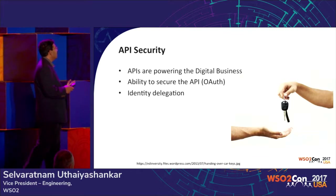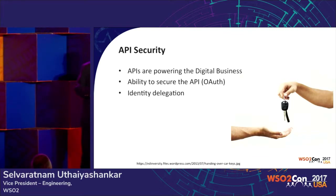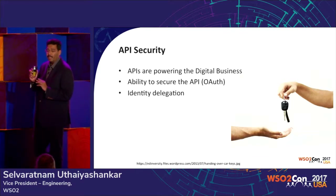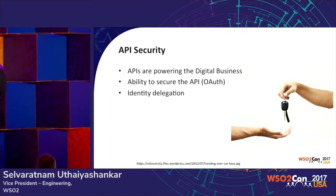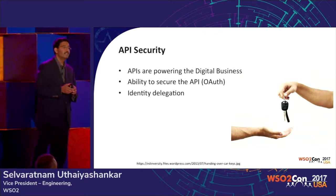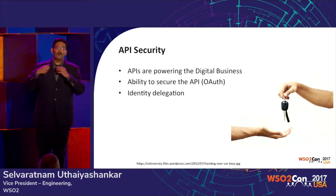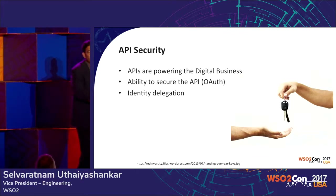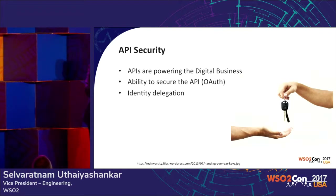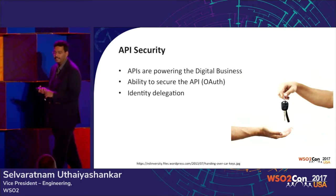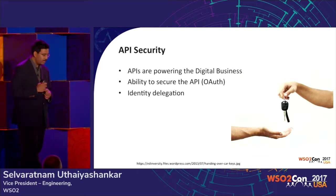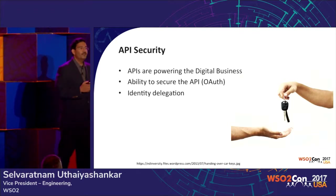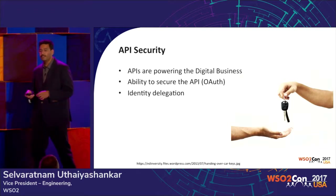APIs are powering the digital business. The ability to secure APIs and delegate the authentication mechanism and identity information is essential. You might own some resources, but when a system accesses them, you might have to delegate your identity to that system so it can access services on your behalf — this is called identity delegation. There are specs like OAuth which help you achieve that, and your identity system should support those features.